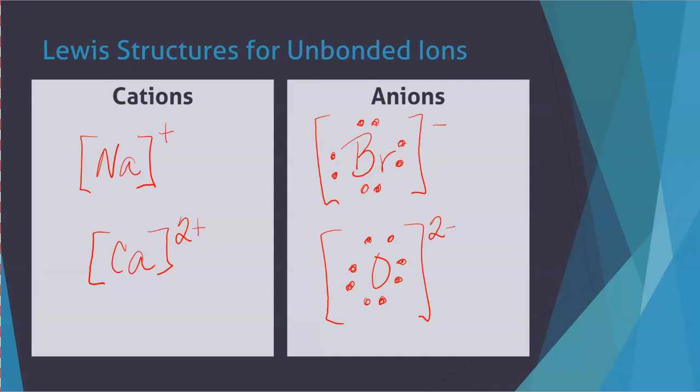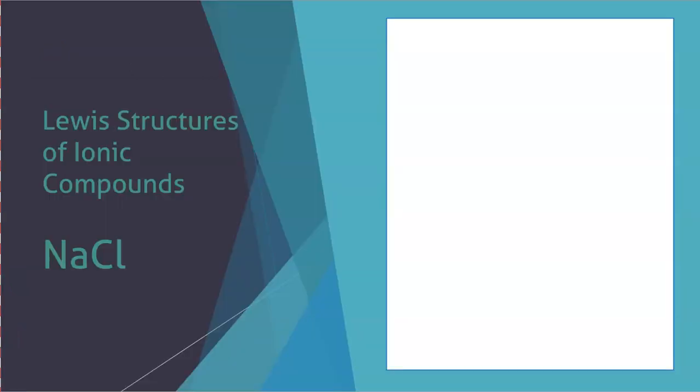The brackets really become important when we start talking about drawing Lewis structures for ionic compounds. So if we have sodium chloride and we want to draw the Lewis structure for that compound, the way that that compound forms is a sodium cation and a chloride anion come close together. And so to draw the Lewis structure, we just draw out our ions close to each other. The anion gets all of the electrons that it needs, it gets eight valence electrons, and the cation doesn't have any.